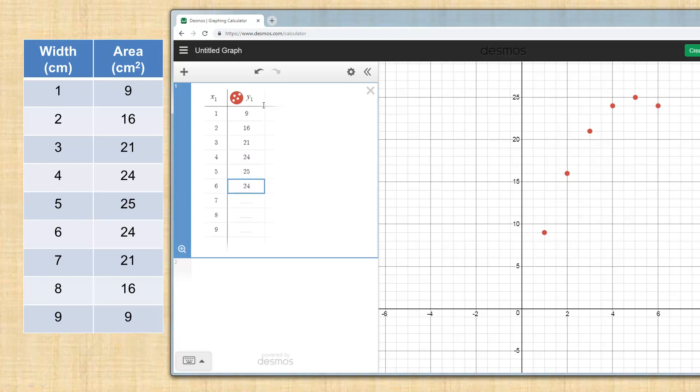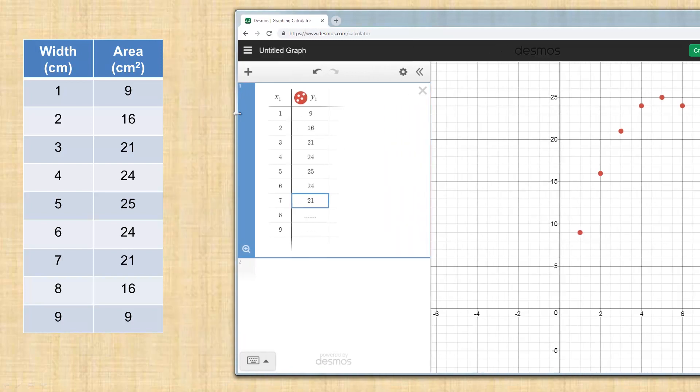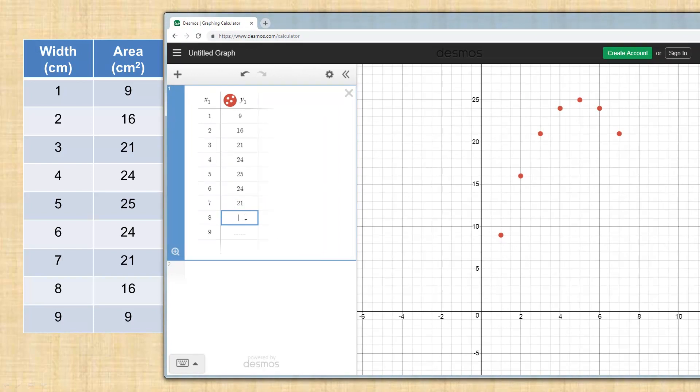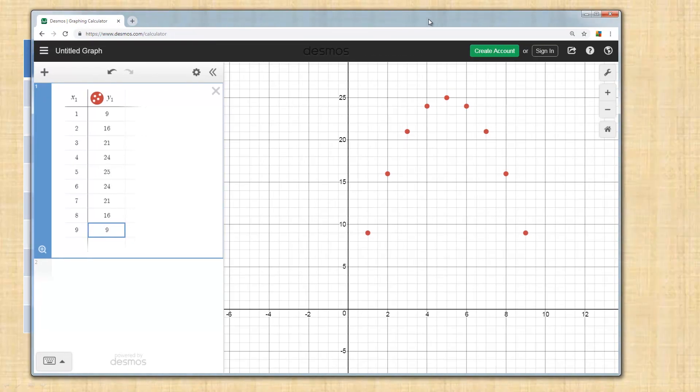In fact, you can see probably the shape of a parabola coming in here. Maybe we'll scrunch this down a little bit so you can see the rest of it. And so this would be 16 and 9. Okay, so there's our data, and you can certainly see it looks like a parabola.